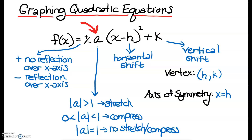Let's talk about all the parts of this equation again. We've already talked about the plus or minus in front of the squared term. If it's positive, that means we have no reflection over the x-axis, meaning that our quadratic opens up. If it's negative, we do have a reflection over the x-axis, meaning our parabola opens down.